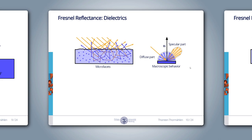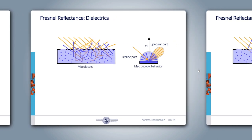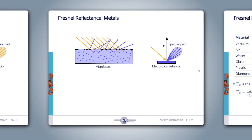The likelihood of absorption inside the medium is wavelength-dependent. Therefore, the diffuse part is colored and the specular part is not. For metals, the complete transmitted fraction is absorbed — there is no diffuse reflection for metals. The reflected part depends on the wavelength, so the specular part is colored.